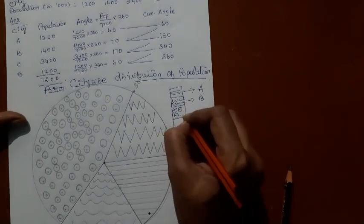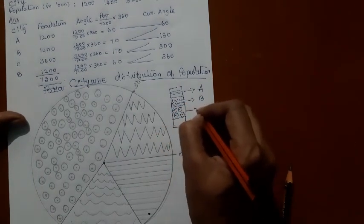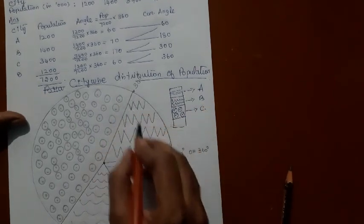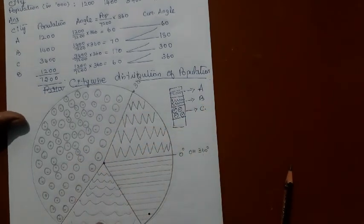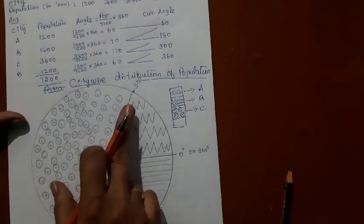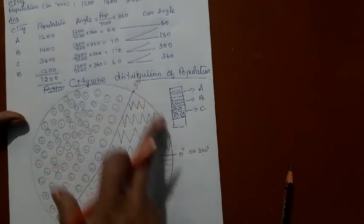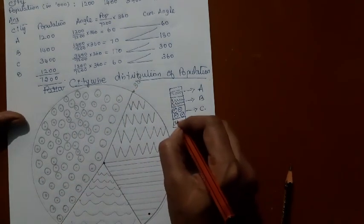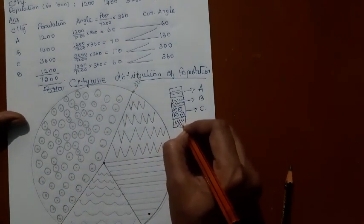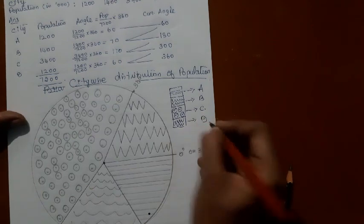And the circles with points at the center are for C. See, from 300 to 360 degrees, it is D.